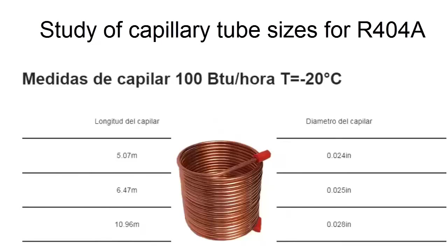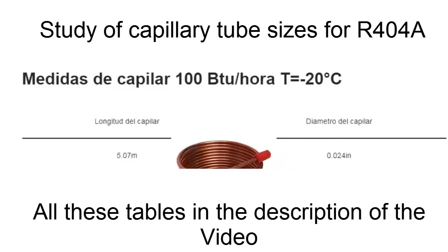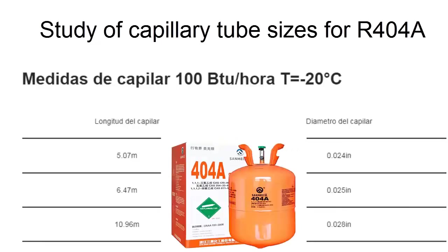On the screen we have the table of measurements of capillary diameter and length for equipment that works with R404A refrigerant, with a capacity of 100 BTU per hour, initially working at minus 20 degrees Celsius — that is, for a low temperature application.